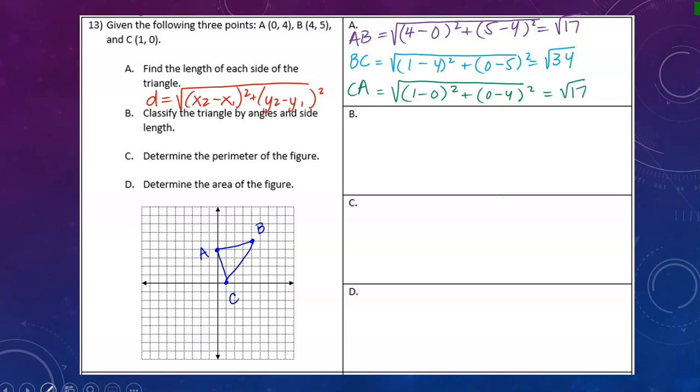I'm going to label my three sides on the picture. CA is the square root of 17, BC is the square root of 34, and AB is the square root of 17. We're done with part A.